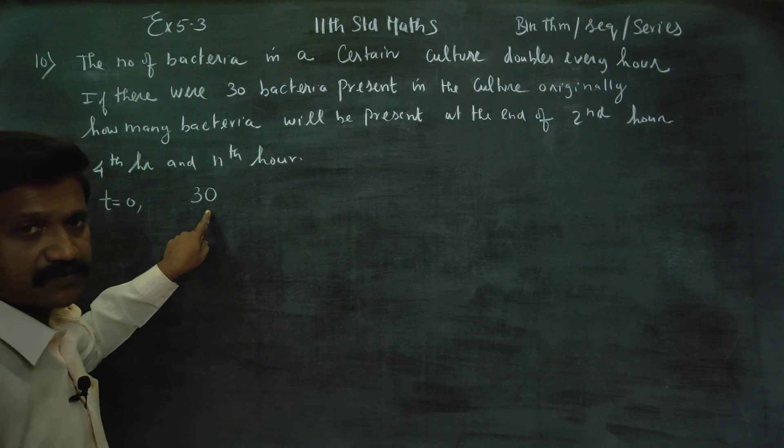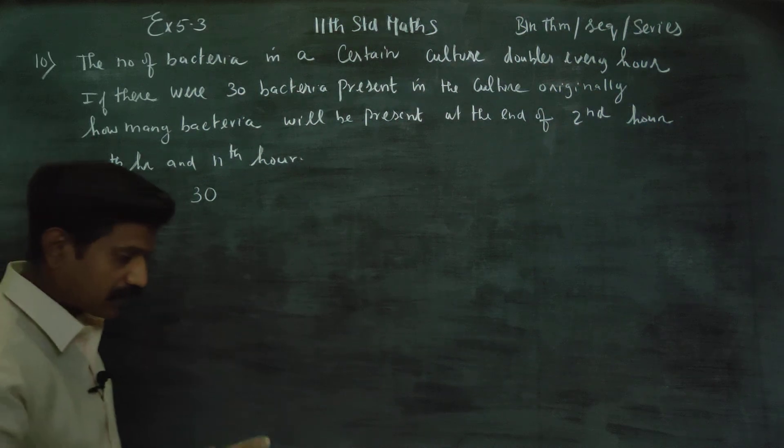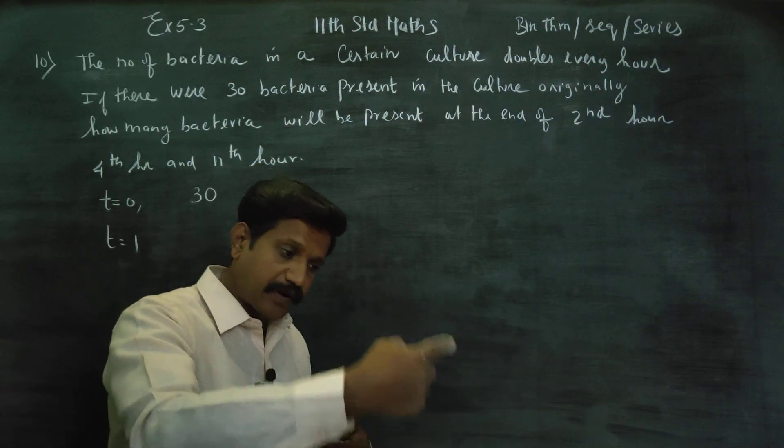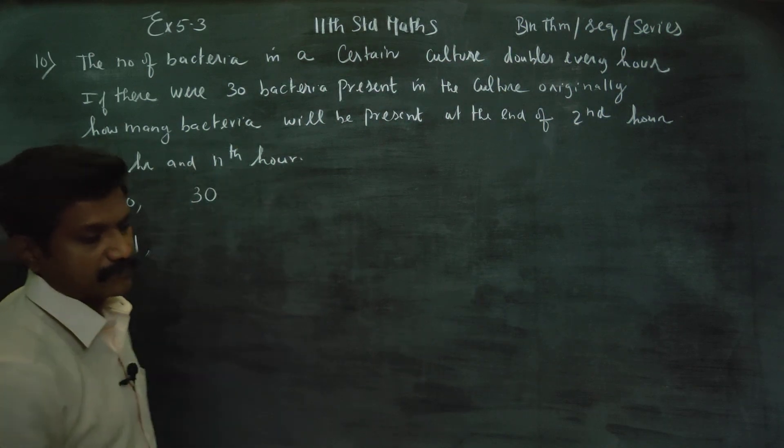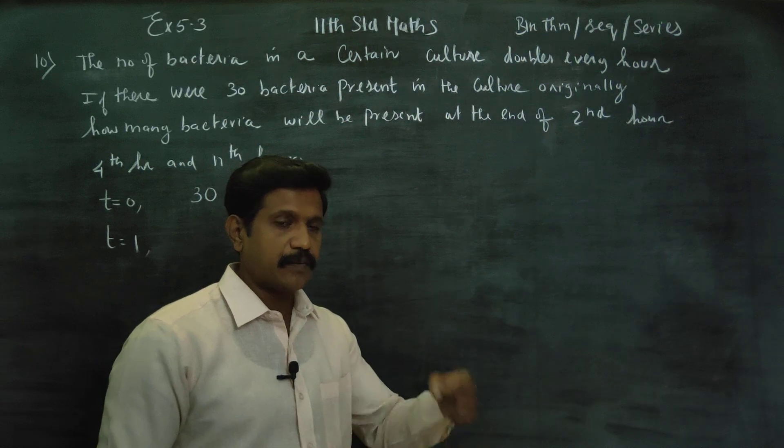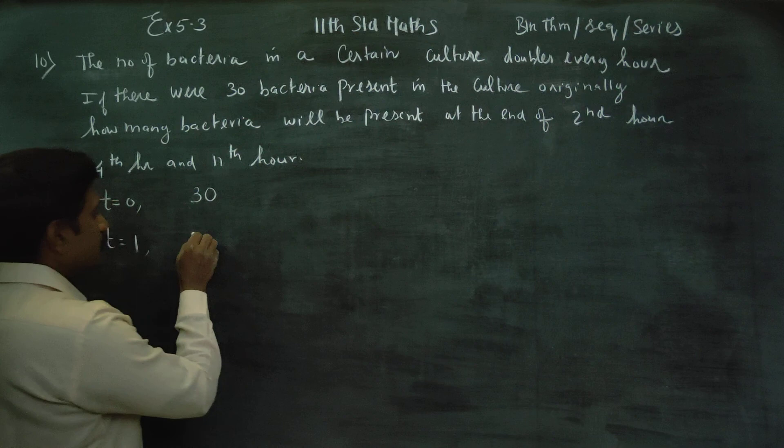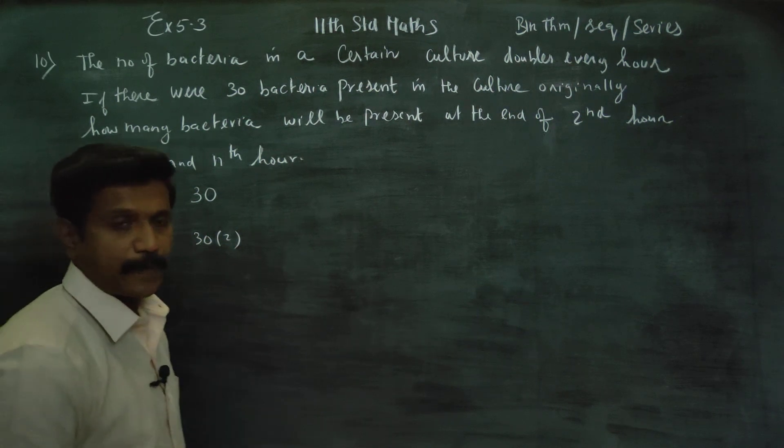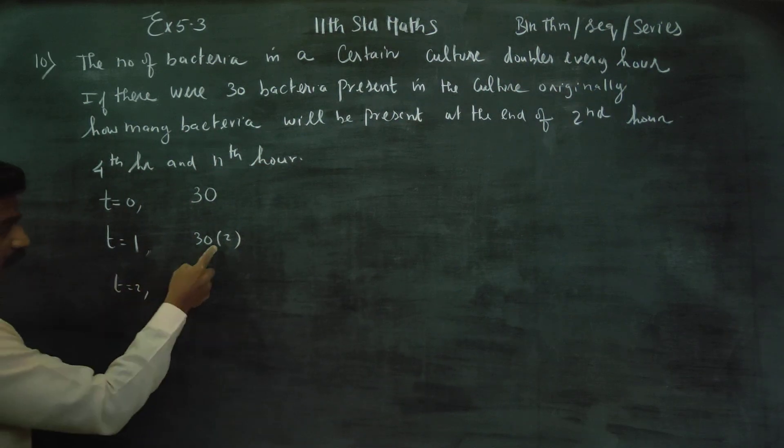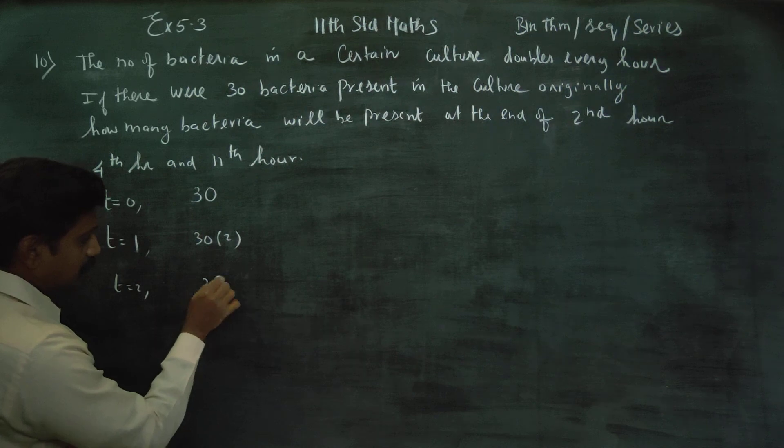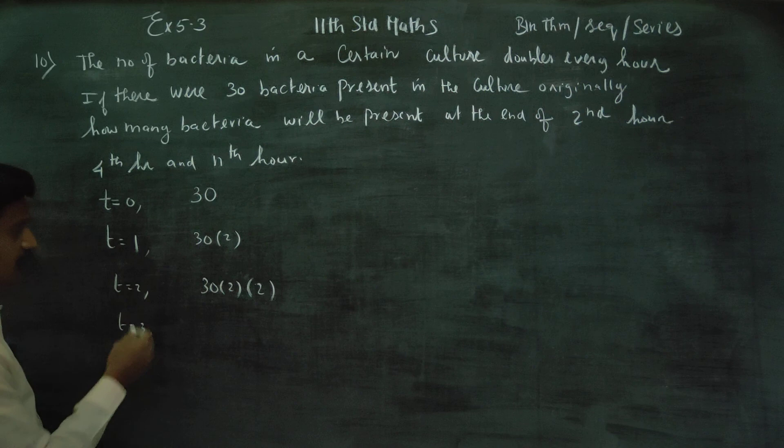How many bacteria? 30 bacteria. After one hour, t equals one. After one hour, the bacteria will double. That's why we have 60 bacteria. This answer is doubled - it's 30 into 2, which is 60 bacteria.